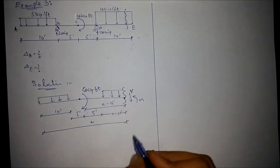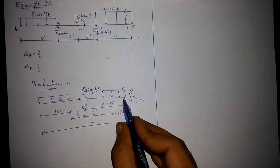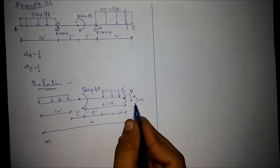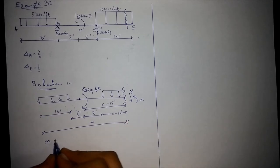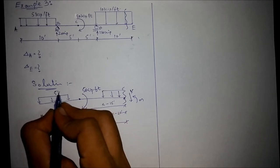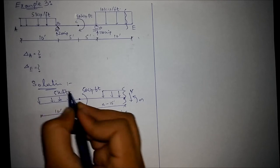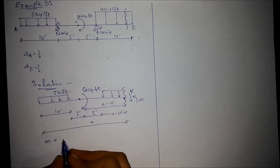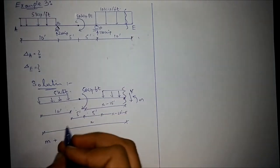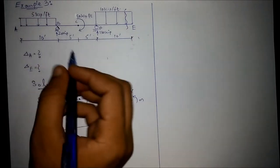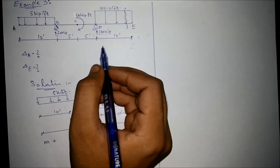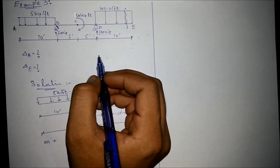For the general moment equation, we sum up the moments at this cut point. The reactions were already found for the given beam as 20 kip and 130 kip, as learned in the previous examples.